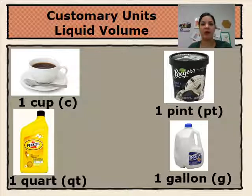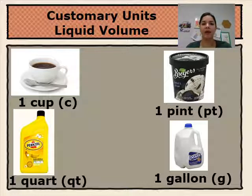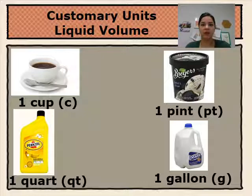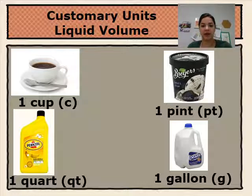To estimate one cup of liquid capacity, we can think of one cup of coffee. To estimate one pint of liquid capacity, we can think of a pint of ice cream. To estimate a quart of liquid capacity, we can think of a container of oil used for a car oil change. And to estimate one gallon of liquid capacity, we can think of a gallon of milk.